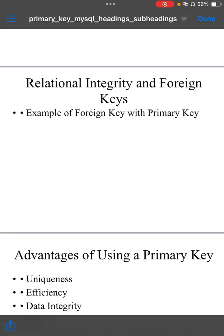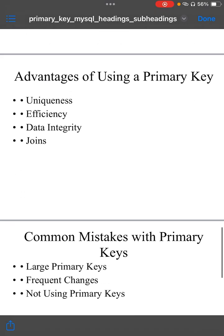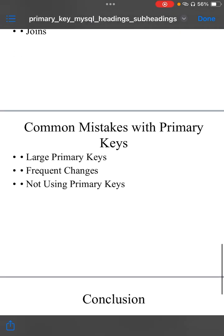Now let's understand few advantages of using primary keys. Uniqueness: it ensures that each row in table is uniquely identifiable. Efficiency: queries using the primary key are highly optimized and fast because of automatic indexing. Data integrity: enforces the uniqueness and non-nullability of data, ensuring that table's integrity is maintained. Joins: using primary key in conjunction with foreign key allows efficient and accurate joins.